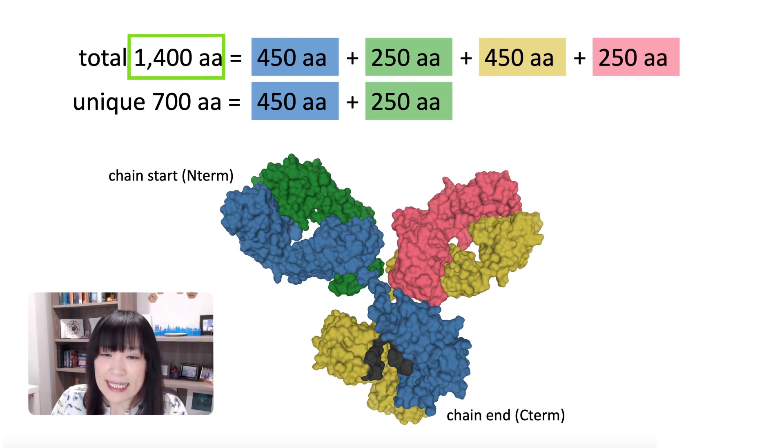Now, in the last slide, I mentioned that the blue and the yellow chain are identical in sequence, and the green and the pink chain are actually identical in sequence as well. So that means the number of unique amino acids that you actually have to keep track of to reconstruct this entire antibody is only about 700.